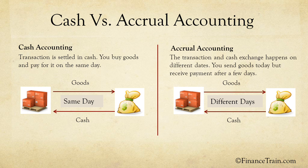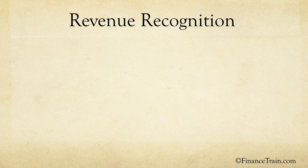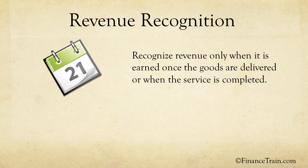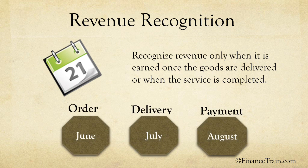Accounting standards such as US GAAP and IFRS require companies to use the accrual basis of accounting. Accrual accounting requires that all revenues and expenses are recorded in the same accounting period in which they occur, irrespective of when the actual cash moves. An important principle related to accrual accounting is revenue recognition. According to this principle, a company recognizes revenue only when it is earned — once the goods are delivered or when the service is completed. For example, if a manufacturer receives an order in June, delivers the goods in July and receives payment in August, revenue is recognized in July when the goods were delivered.